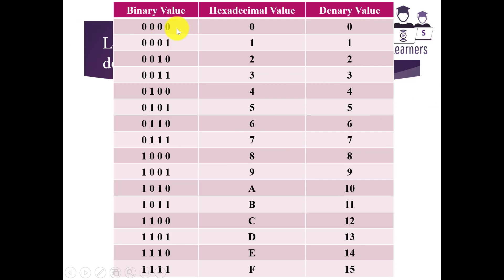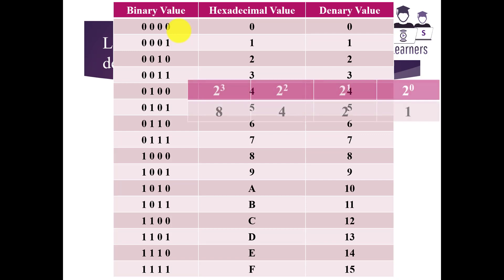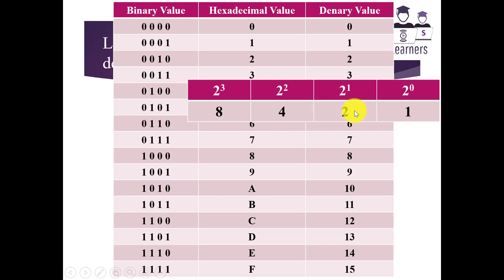To calculate the 4-bit binary values for each hexadecimal value, I'll show you a simple method using the place value table with column values 1, 2, 4, and 8. Starting from the right, the value is 1 so I write alternating 1s and 0s. The next column is 2 so I write two 0s then two 1s, repeating. The column for 4 uses four 0s then four 1s, and for 8 it is eight 0s then eight 1s. This is the simplest method to create a binary table for hexadecimal values.